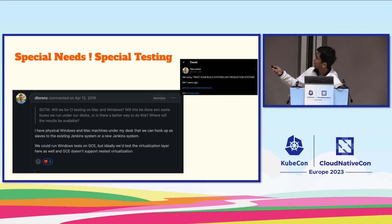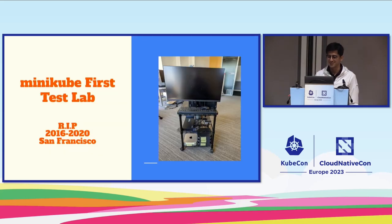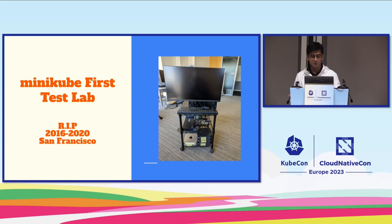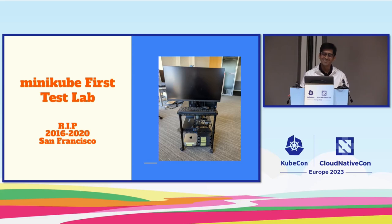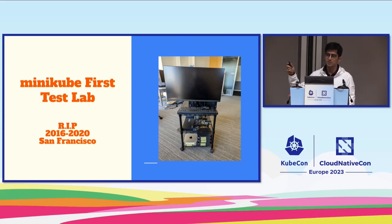There's a tweet by Dan Lorne that says 'me, seven years ago: treat your build systems like production systems.' He was talking about his computers under his desk — these are actually real pictures of those computers. Unfortunately, we lost this test lab to COVID. We lost it because you could not go to the office to do things with them — they required manual interventions like restarting them, changing cables. So they're all dead now, though we still have them. The Jenkins machine they were hooked up to is still running.